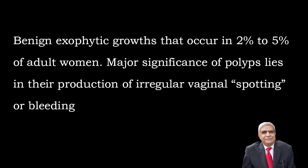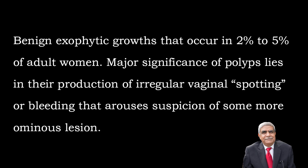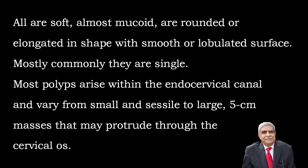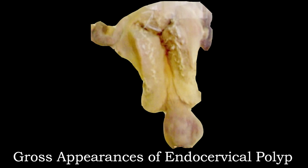Endocervical polyps are benign exophytic growths seen in 2-5% of adult women. Their major significance lies in the production of irregular vaginal spotting or bleeding during intercourse, which may be taken as a suspicious sign. Gross appearances: almost all are soft, mucoid, elongated or rounded in shape, with a smooth or lobulated surface. Most commonly they are single. Most polyps arise in the endocervical canal and vary from small and sessile to large masses up to 5 cm that may protrude through the cervical os, as seen in the photograph.